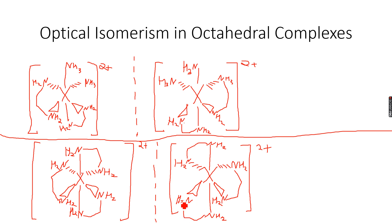These are our optical isomers — non-superimposable mirror images. This is optical isomerism in an octahedral complex. It will not get more difficult than this; this is exactly what you have to remember. We will now come to geometrical isomerism in octahedral complexes.